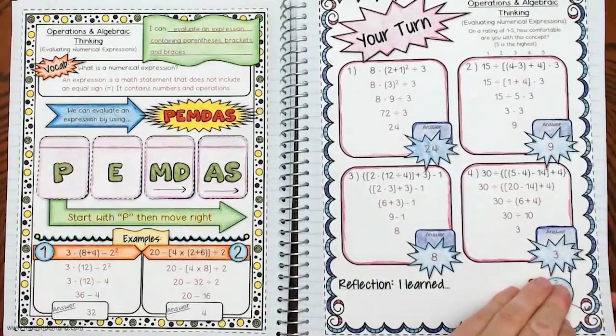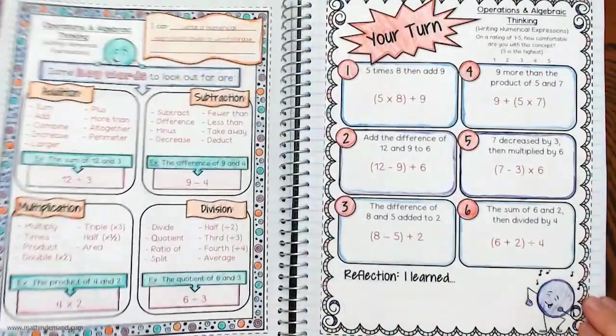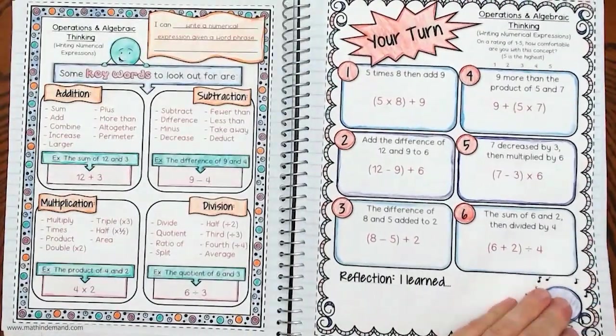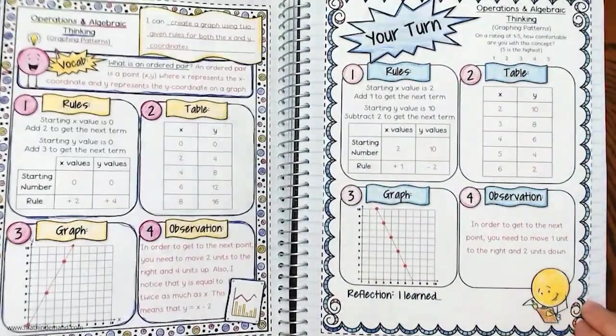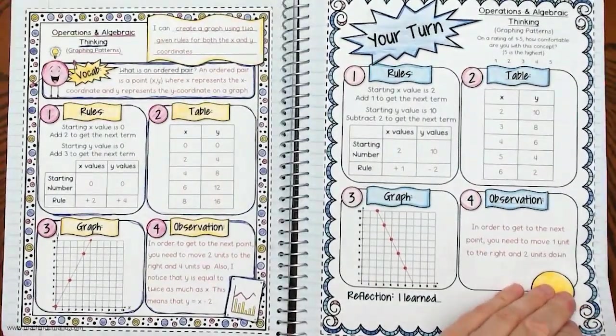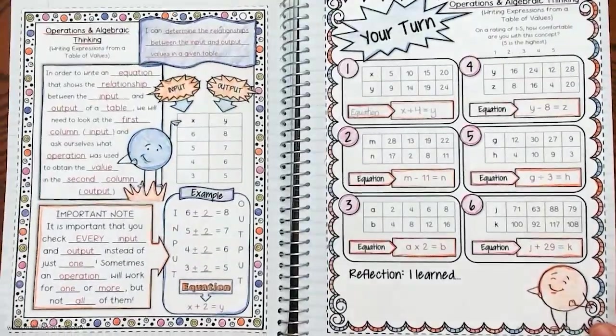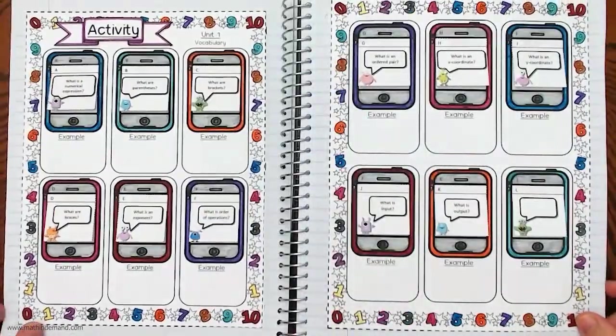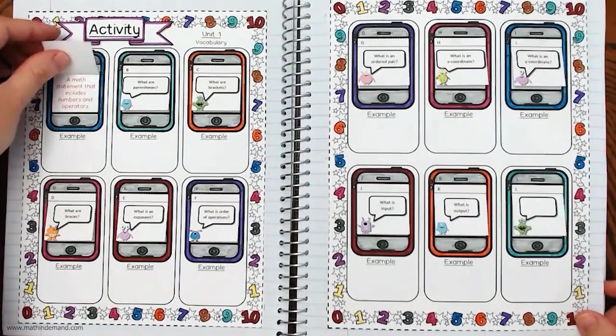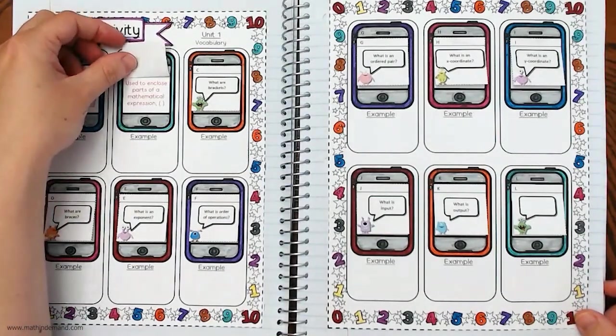Unit one is on operations and algebraic thinking. Students will be evaluating numerical expressions, writing numerical expressions, translating numerical expressions, graphing patterns, and writing expressions from a table of values. At the end of each unit, there is a vocabulary activity that includes little foldables.